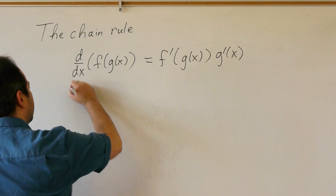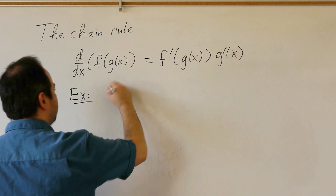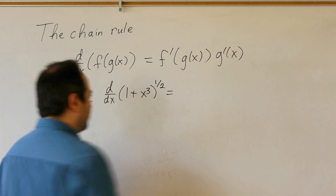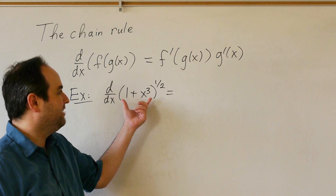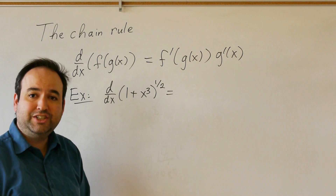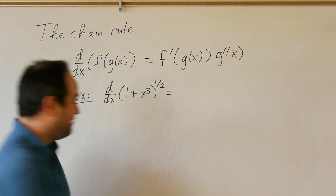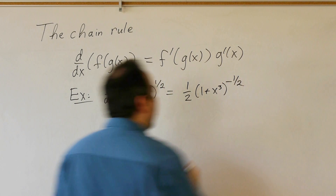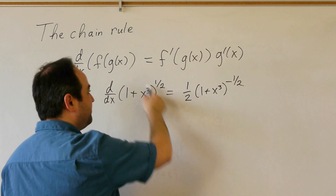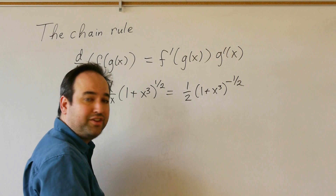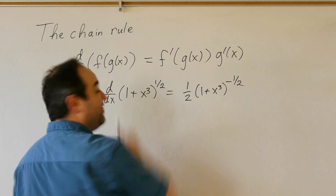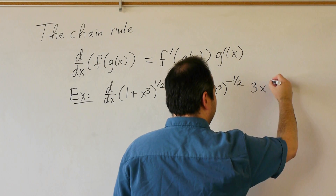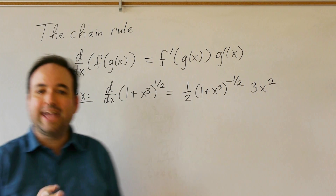For example, if I want to find the derivative with respect to x of (1 + x³) to the 1/2 power, the outer function here is the function being raised to the 1/2 power. To differentiate that, I bring down the 1/2, reduce the exponent by 1, and then multiply by the derivative of the function inside — 1 + x³. The derivative of 1 is 0, and the derivative of x³ gives 3x squared.